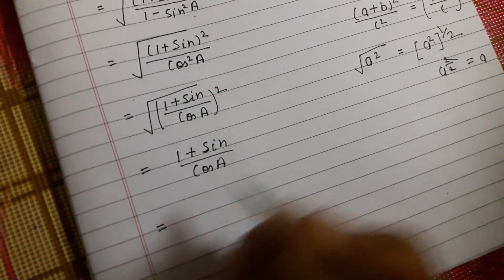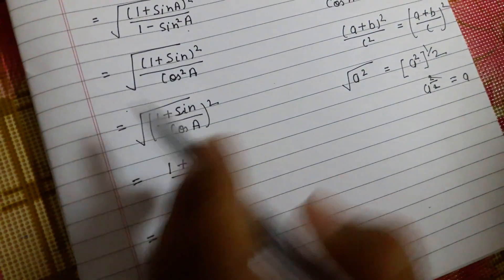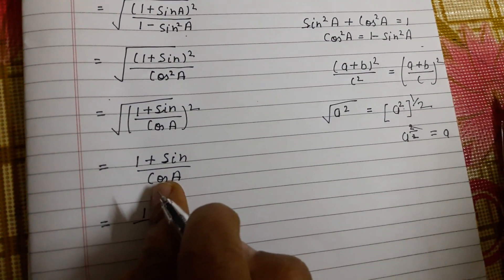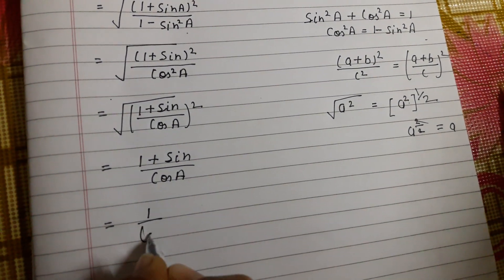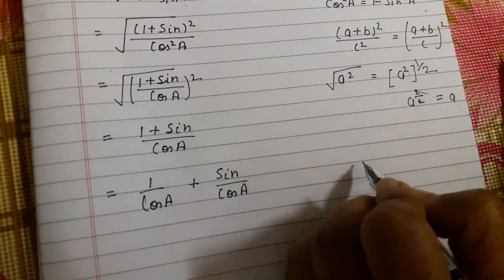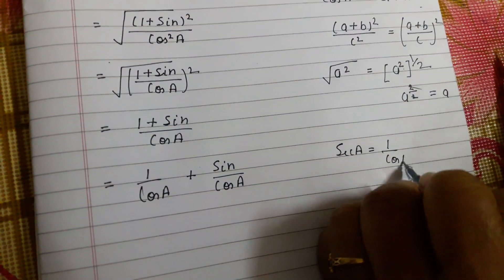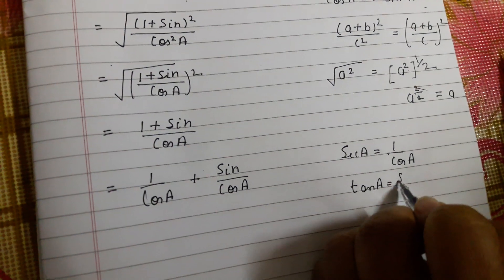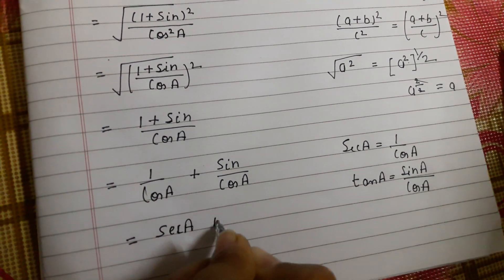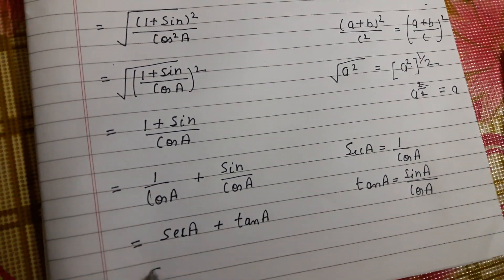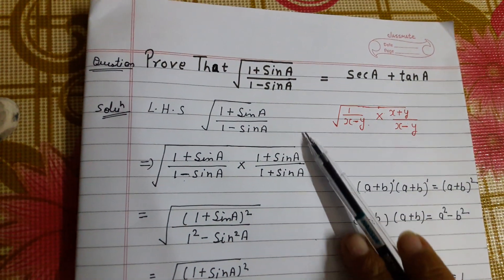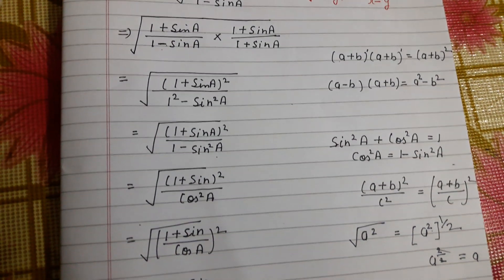Now we separate the fraction: (1 + sinA) / cosA = 1/cosA + sinA/cosA. We know that 1/cosA = secA and sinA/cosA = tanA. So the left hand side equals secA + tanA, which is the right hand side. Hence the question is proved. This is an easy method — I hope you have understood it completely.